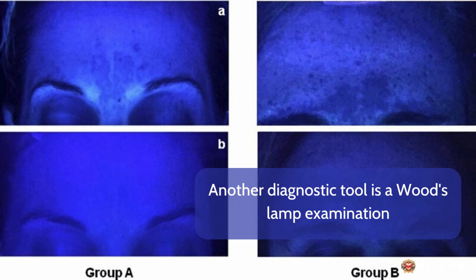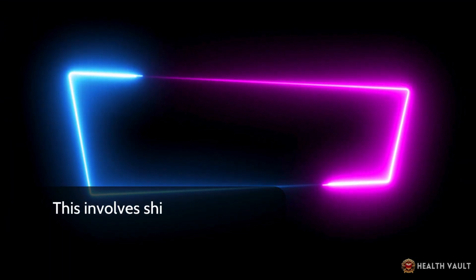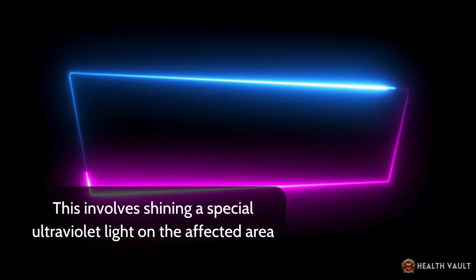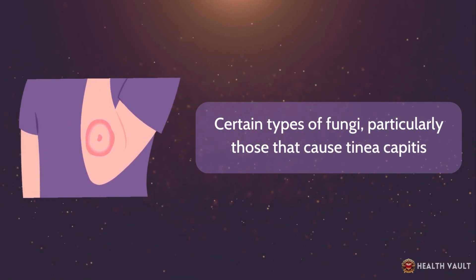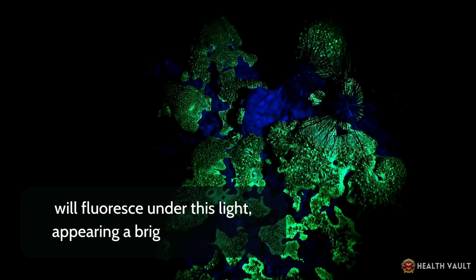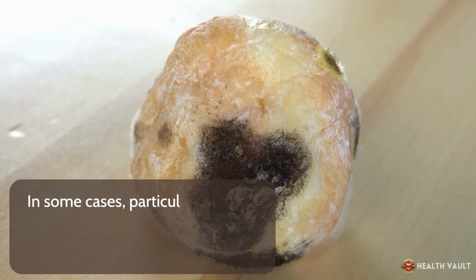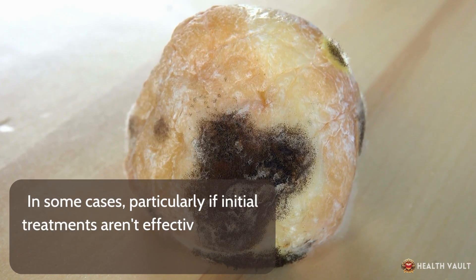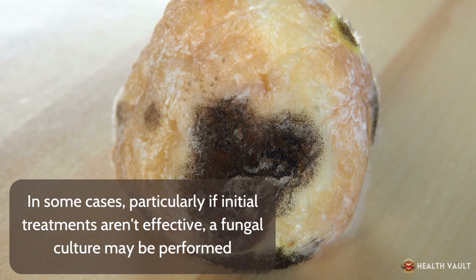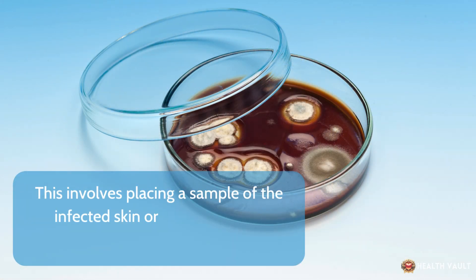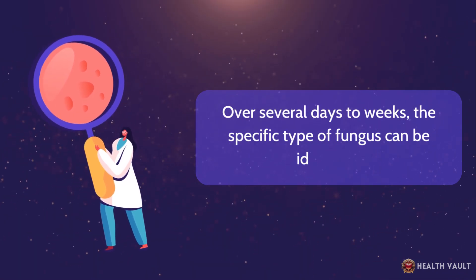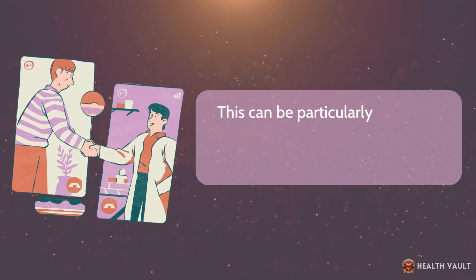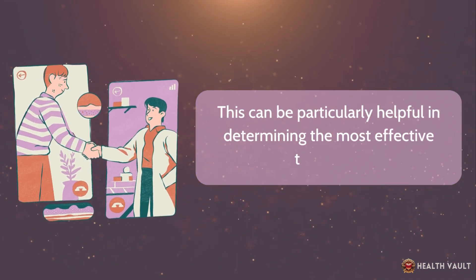Another diagnostic tool is a Wood's lamp examination, which involves shining a special ultraviolet light on the affected area. Certain types of fungi, particularly those that cause tinea capitis, will fluoresce under this light, appearing a bright green color. In some cases, particularly if initial treatments aren't effective, a fungal culture may be performed. This involves placing a sample of infected skin or nail in a special medium that encourages fungal growth. Over several days to weeks, the specific type of fungus can be identified, which can be particularly helpful in determining the most effective treatment.